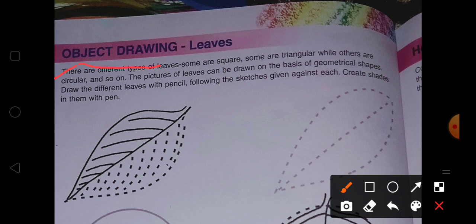There are different types of leaves. Some are square, some are triangular while others are circular and so on. The picture of leaves can be drawn on the basis of geometrical shapes. Draw the different leaves with pencil following the sketch given against each. Create shade in them with pen.